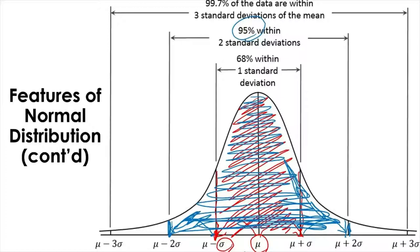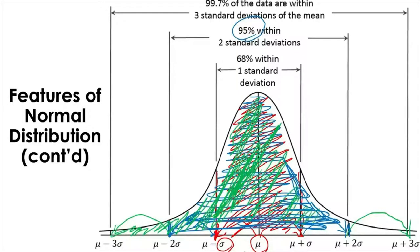And if you go out further to three standard deviations — so that's three standard deviations below the mean and three standard deviations above the mean — then this green area will be 99.7%. So this is just a rule you want to remember.